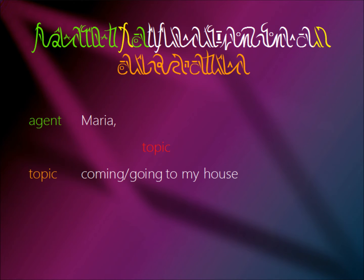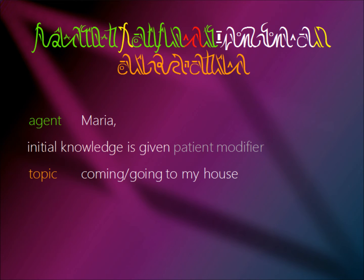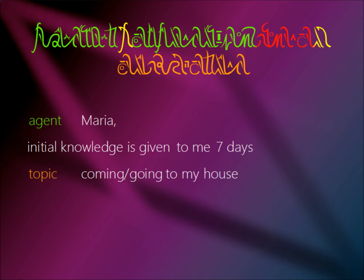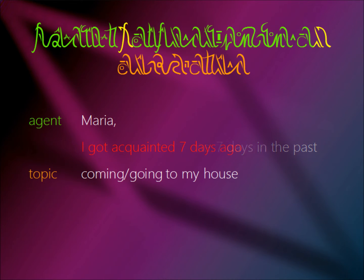HA, a topic. JA, a patient. And IR, a modifier. Our topic consists of EI, knowledge, and LI, the origin marker. Therefore, EI-LI means initial knowledge, or also simply, to learn. This knowledge is given to AIMA, myself. And our modifier IR starts with UECADO, which means seven days, and HASTA AERA, which means the past. So the entire subclause — HA EI-LI YA AIMA IR UECADO ASTA AERA — means: I got acquainted seven days ago.